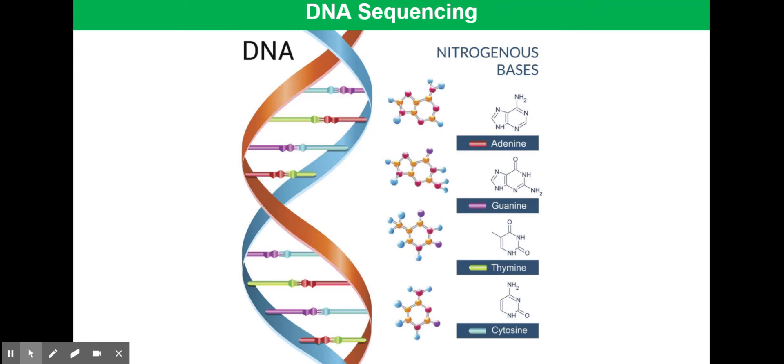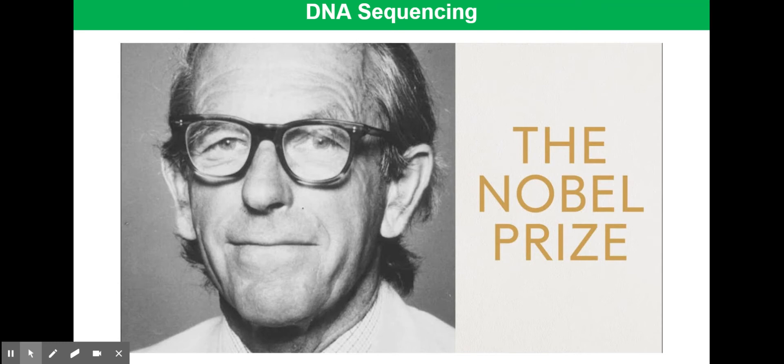In 1972 the British biochemist Fred Sanger developed a method that ultimately allowed scientists to sequence the whole genome. This is an image of Fred Sanger and for the work he did he was awarded the Nobel Prize.